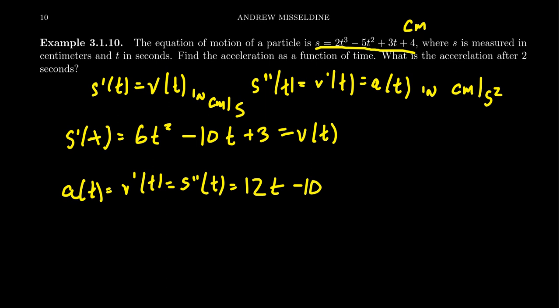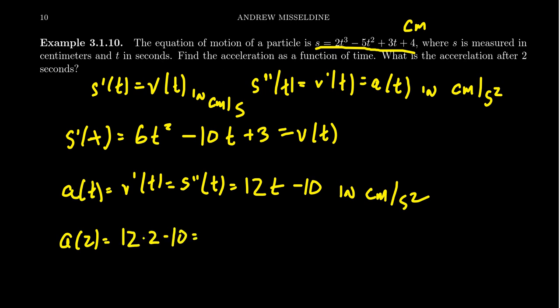So our function 12t minus 10 is measured in centimeters per second squared. If we want to figure out the acceleration after two seconds, we compute a of 2, which gives us 12 times 2 minus 10. 2 times 12 is 24, minus 10 gives us 14. So the acceleration at time 2 is 14 centimeters per second squared.